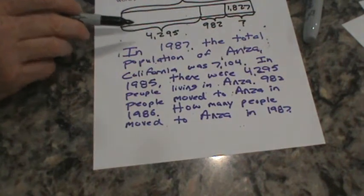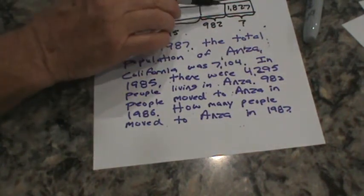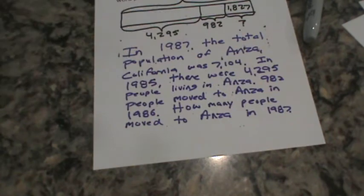So we can see we get 4,295, 982, 1,827. We get 7,104.